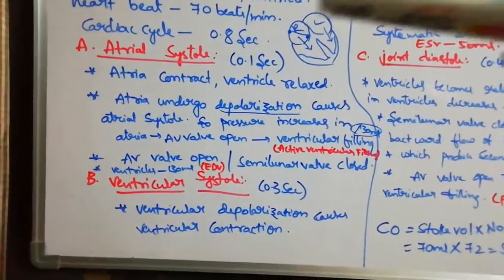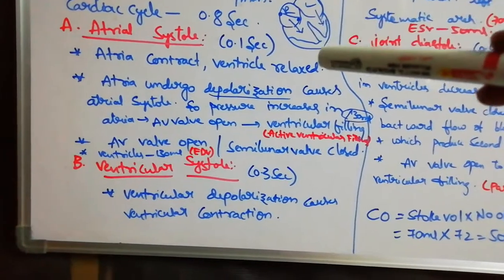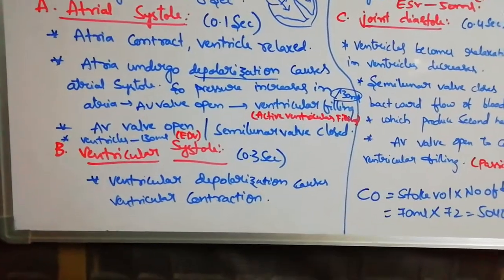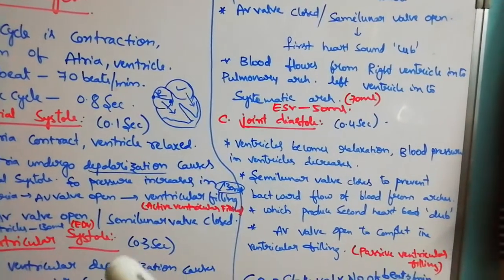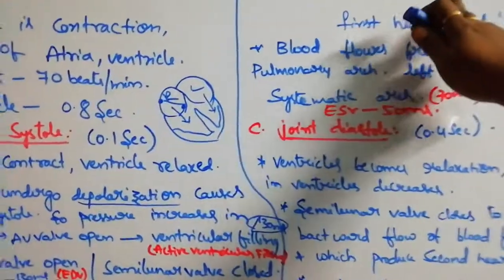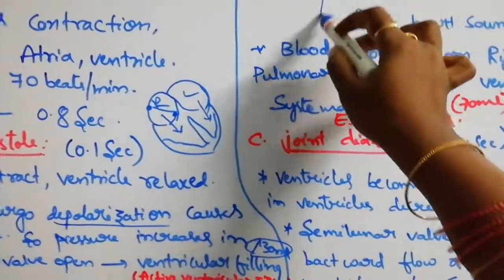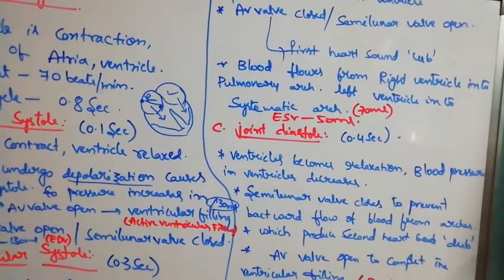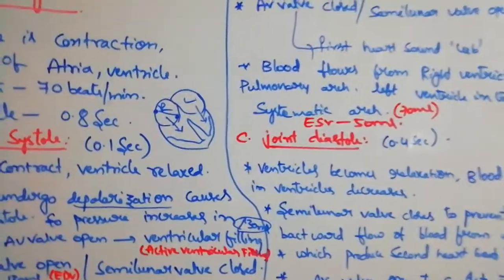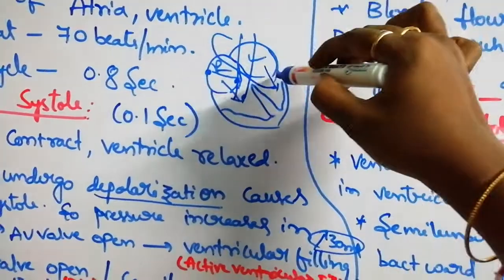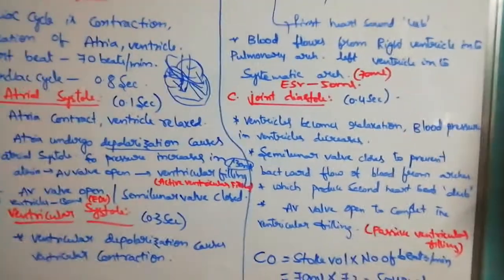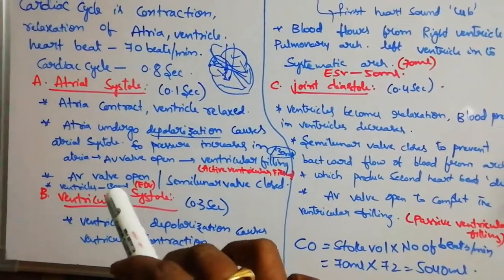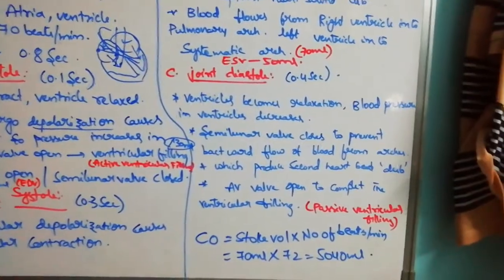During ventricular systole, the impulse moves from the AV node through AV bundles, branches, and Purkinje fibers, causing ventricular depolarization and contraction. As ventricular pressure increases, the AV valves close to prevent backward flow and semilunar valves open. The closing of AV valves produces the first heart sound. Blood enters the pulmonary and aortic arches; 70 ml is ejected, leaving an end systolic volume of approximately 60 ml.